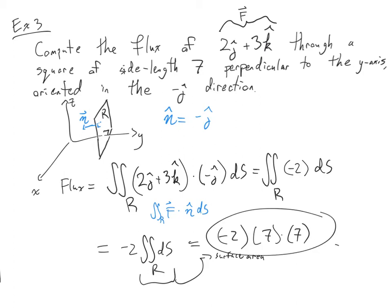I definitely get negative flux. You could notice that f is moving plus 2 in the y-direction and plus 3 in the z-direction, and it does in fact look like that makes an obtuse angle with n, so I should be getting negative flux. Notice I didn't actually parameterize my square — I didn't need to and I didn't know where it was. I still had enough information to solve the problem.